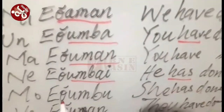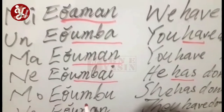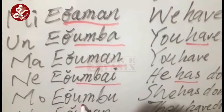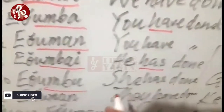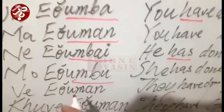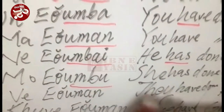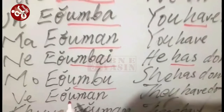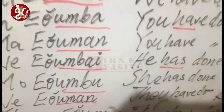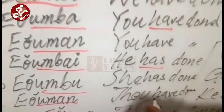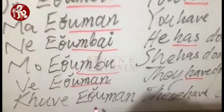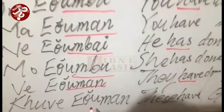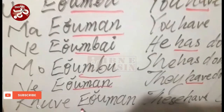'Ne etumbai' — he has done. With 'he' you use 'has.' 'Ma etumbu' — she has done. Then 'we etuman' — they have done, more than one person.